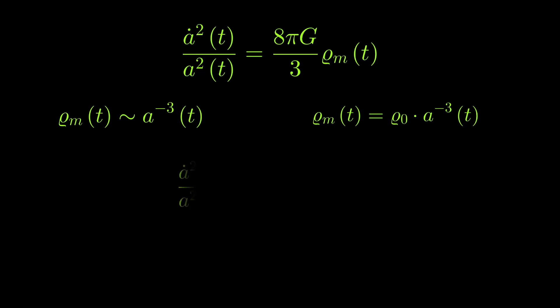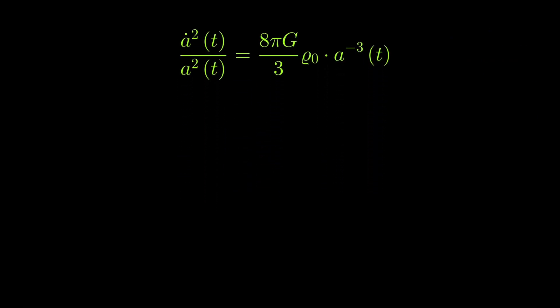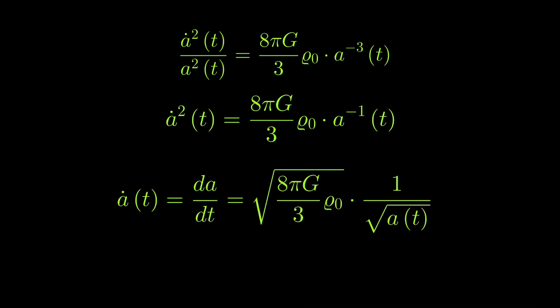So, let's plug that in into the Friedman equation, and we will get 8πG on the right side divided by 3 times ρ₀ times a to the power of minus 3, dependent on t. Now, we can multiply both sides of the equation with a squared, and what we will get then is that a dot squared is equal to 8πG over 3 times ρ₀ times a to the power of minus 1 of t. Then, we can write a dot as da over dt. And then, we have that this is equal to the square root of 8πG times ρ₀ over 3 times 1 over the square root of a(t).